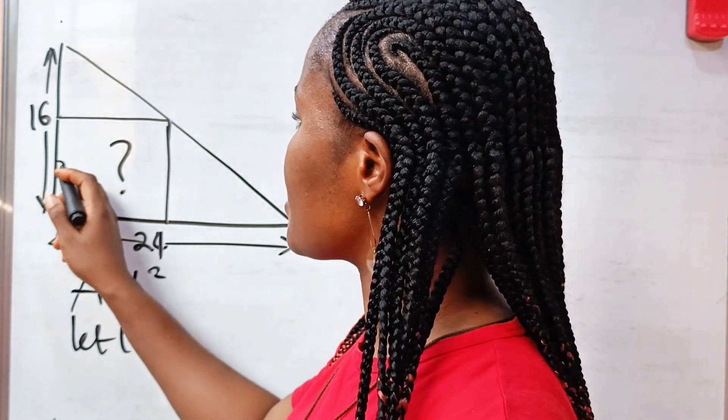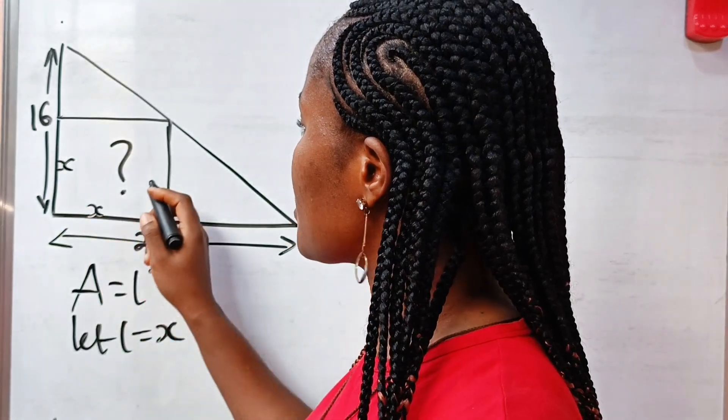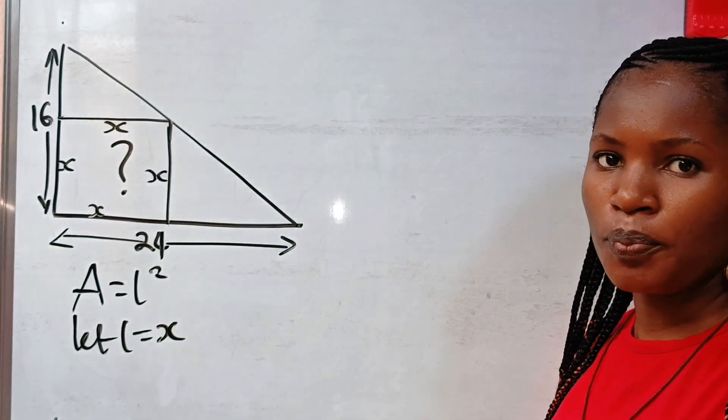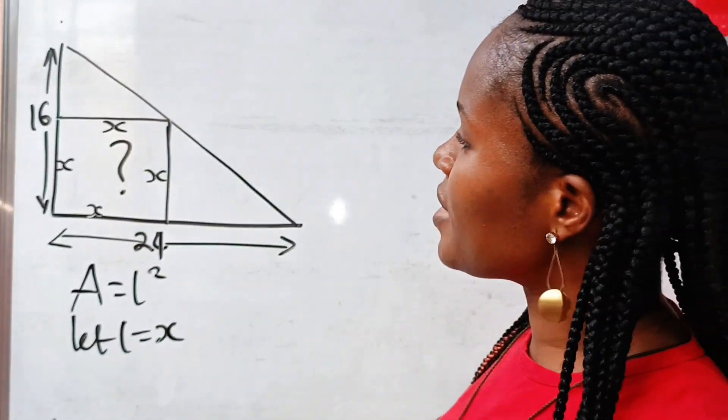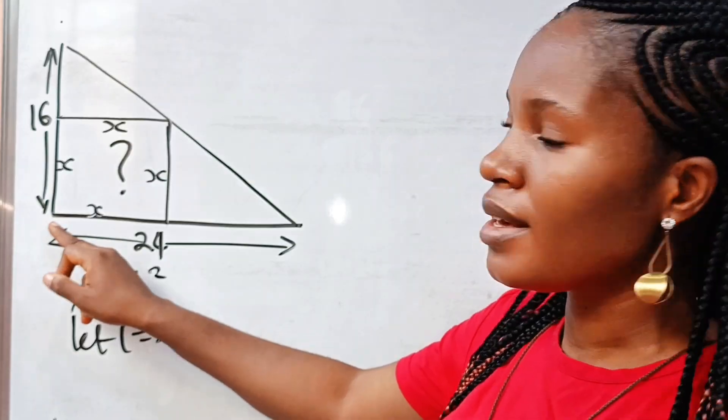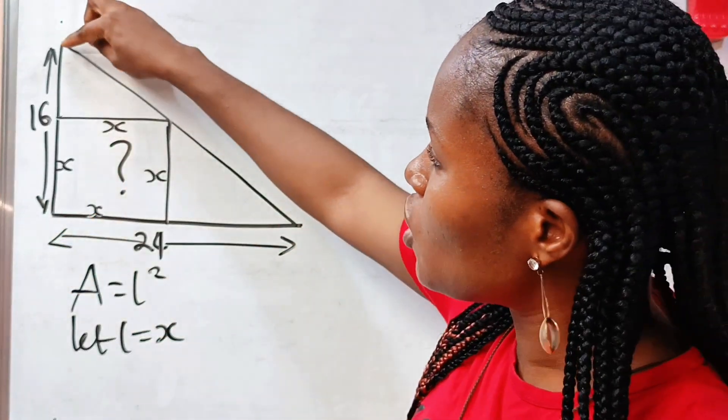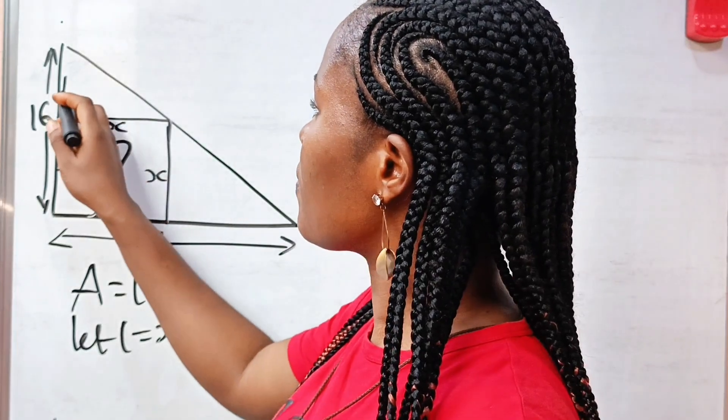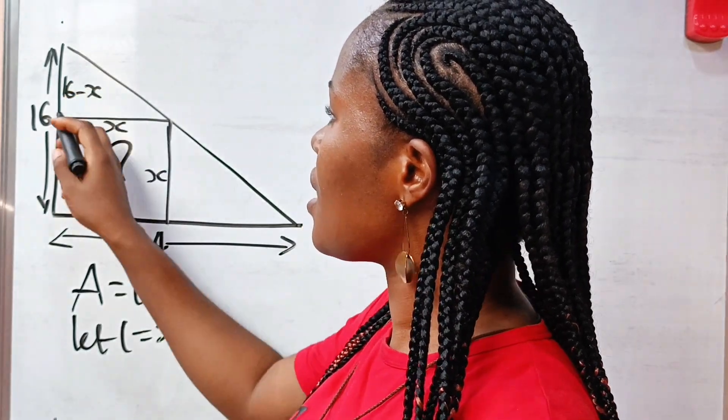So it means that all four sides are X. Now, if we say that this is X and from here to here is 16, it means that just this side, from here to here will be 16 minus X. So we have 16 minus X here.